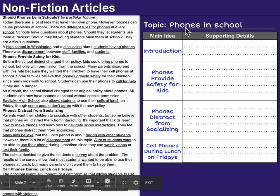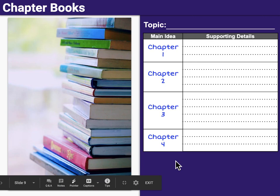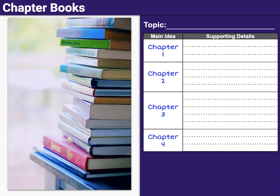For a non-fiction book, it may look like this. Our topic here is butterflies, but we may need to identify the main ideas ourselves because there are no subtitles. So this page is about the body parts of a butterfly, reproduction, and life cycle. For chapter books, if you're reading a long text, you may want to divide it by chapter — so here we have chapters 1, 2, 3, etc.